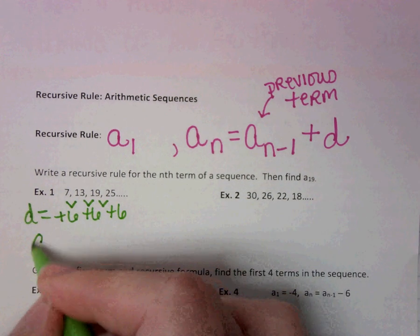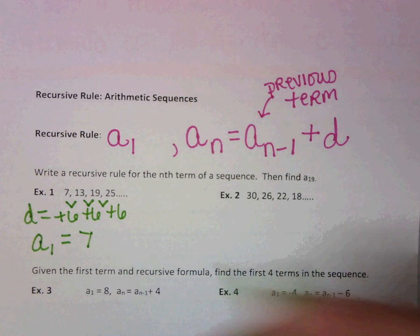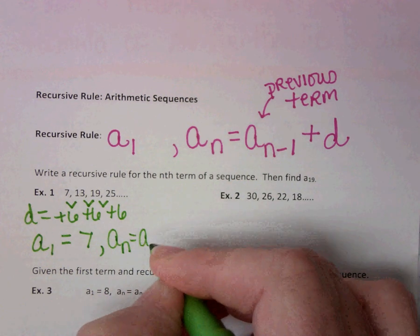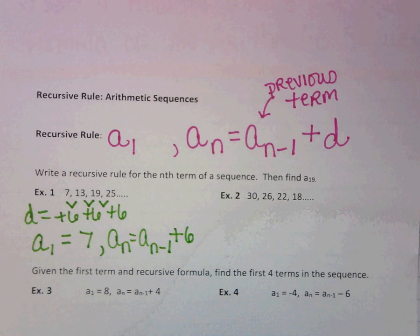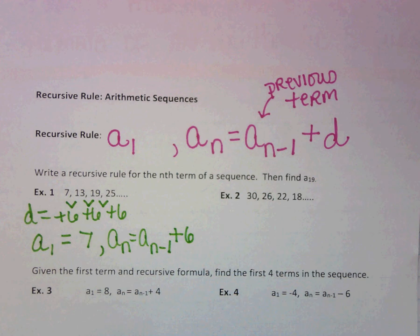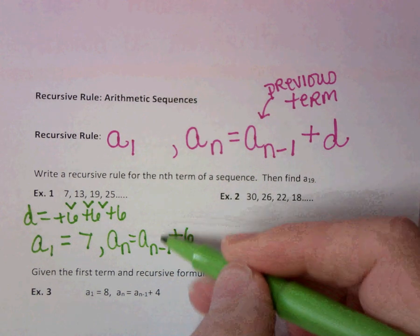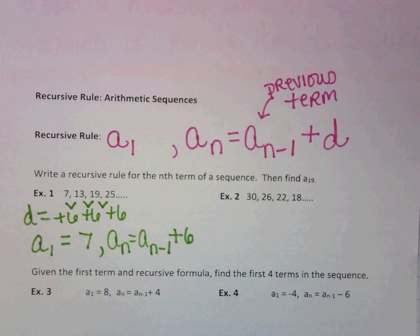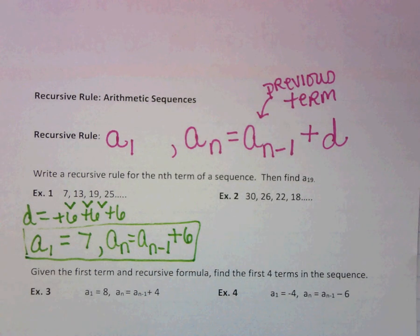All we have to do now is state what a sub 1 is. a sub 1 equals 7. Then we write a sub n equals a sub n minus 1 plus 6. One thing I want to point out is that with an arithmetic sequence, it's always plus or minus something. We're always adding or subtracting something to a sub n minus 1. That's one way to tell it would be arithmetic.